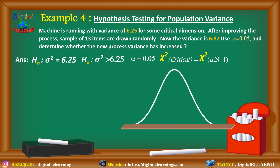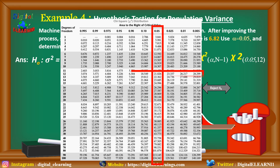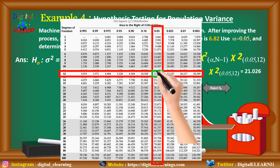We need to calculate the chi-square critical value, which is chi-square alpha with n minus 1 degrees of freedom. Plotting in the graph, since it is a right-tailed test, the rejection region is on the right side. For alpha equal to 0.05 and n minus 1 equal to 12, we look up the chi-square table at 0.05 and degree of freedom 12, and we get the chi-square critical value as 21.026. Since it is a right-tailed test, it is a positive value.